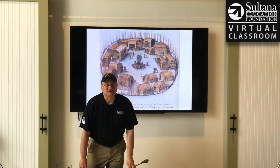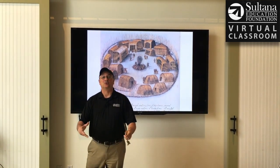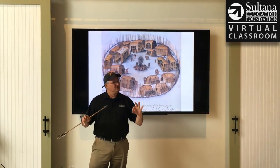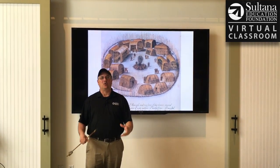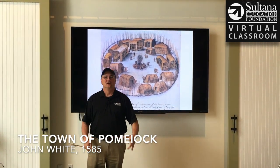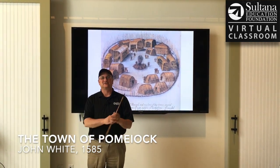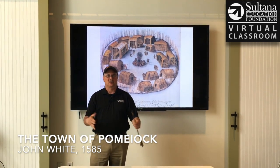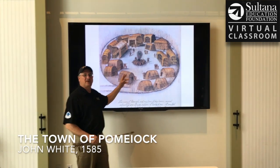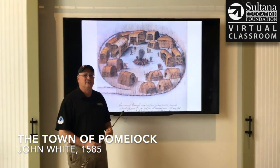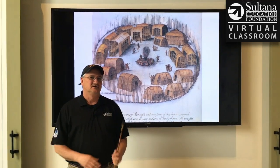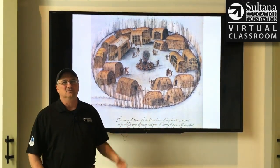Hey everybody, Chris Serena here with Sultana Education Foundation's Virtual Classroom. Today we're going to be showing you a really famous and really cool image by artist John White of the town of Pomiok. John White was one of the founding members of the ill-fated colony of Roanoke, and he traveled to the outer banks of what we today would call North Carolina in 1585 and made this watercolor image — part of a series of watercolor images he made of the Carolina Algonquins.